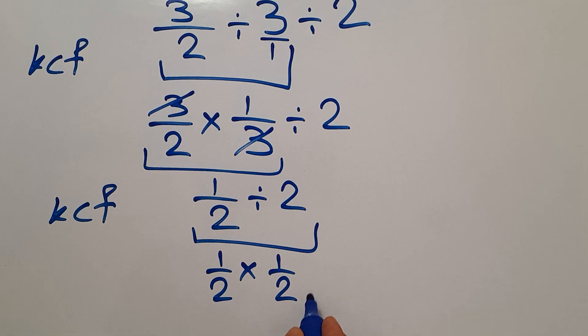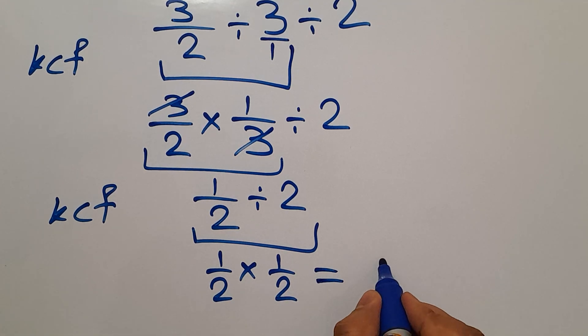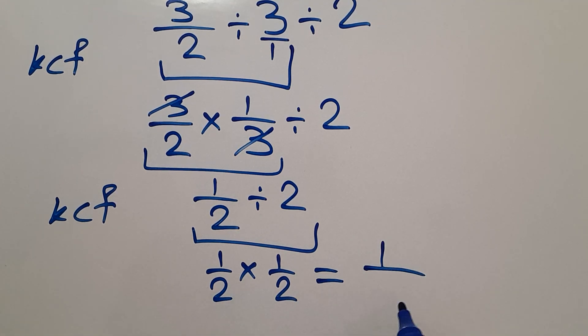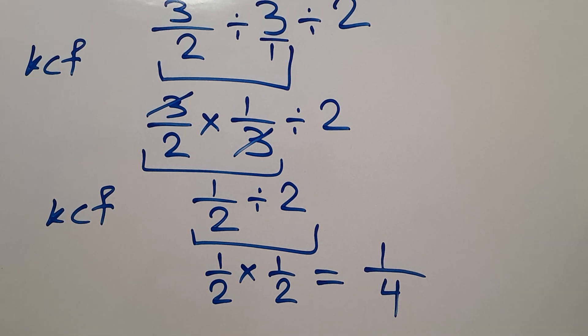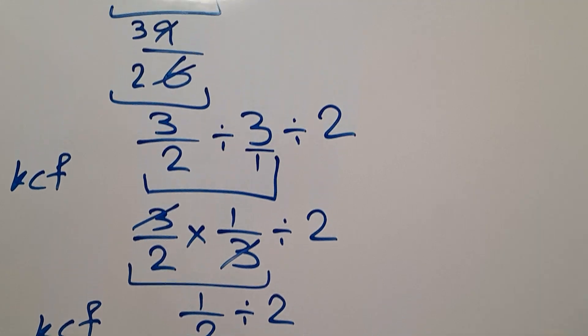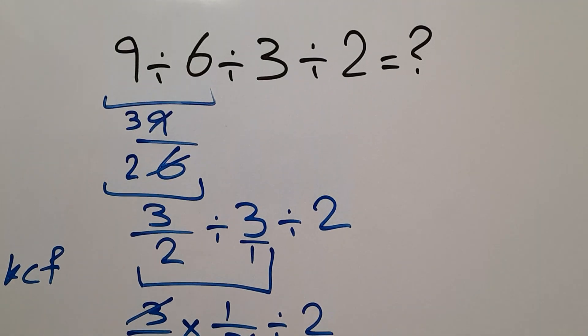And this is equal to 1 over 2 times 2, which equals 4. So our final answer to this problem is 1 divided by 4.